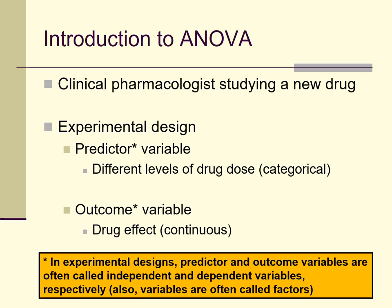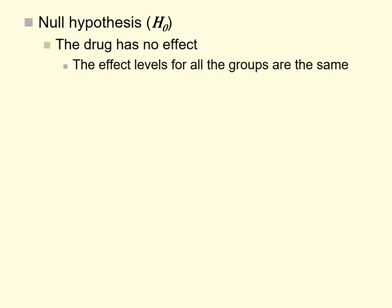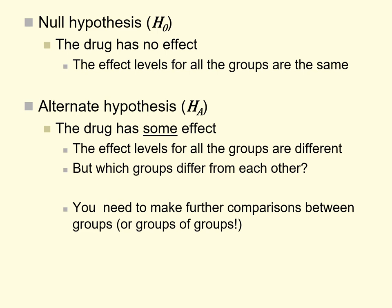I like to use the terms predictor and outcome variables because it reminds us that what we're doing is essentially a special case of regression. In our example, the null hypothesis is that the drug has no effect — the predicted level of drug effect is the same across all groups. The alternate hypothesis is that there is some drug effect, meaning some difference in measured drug effect across the different levels of the predictor variable.